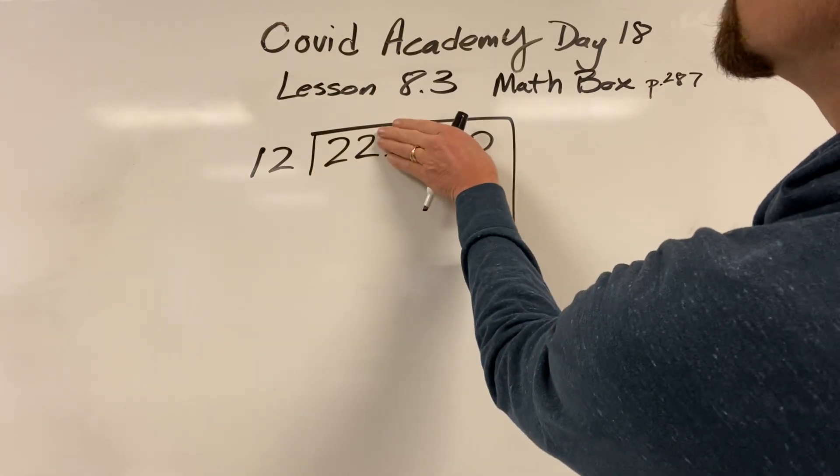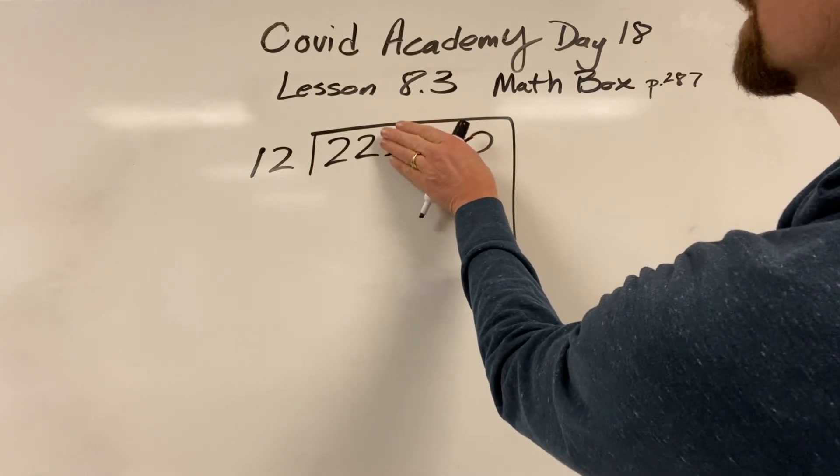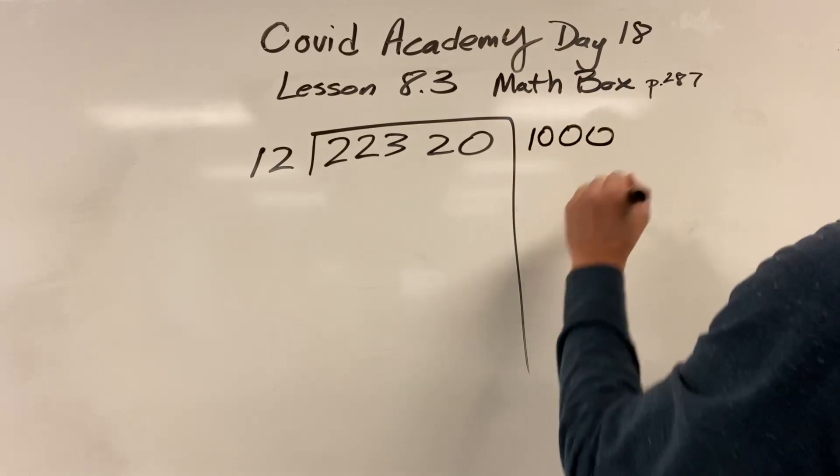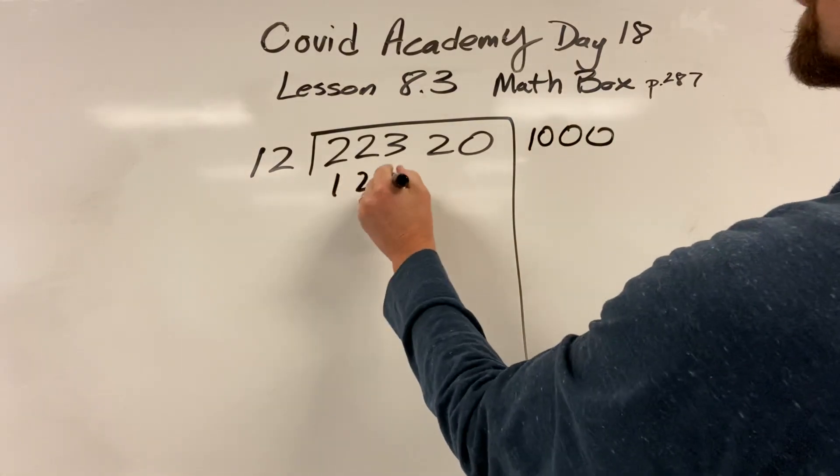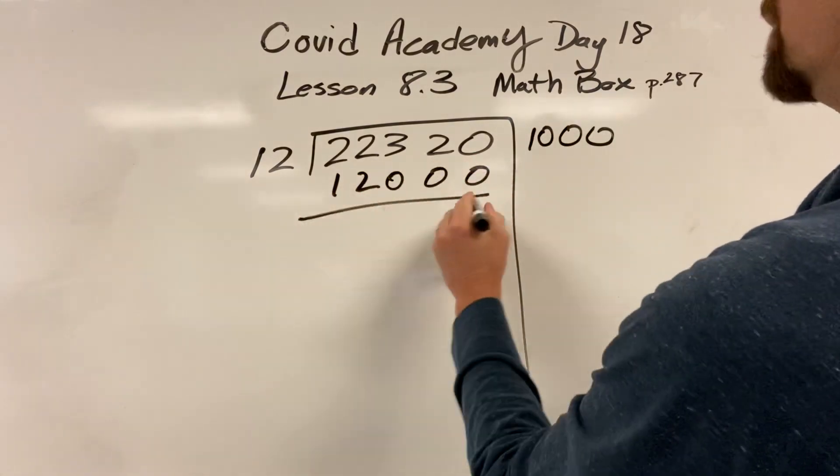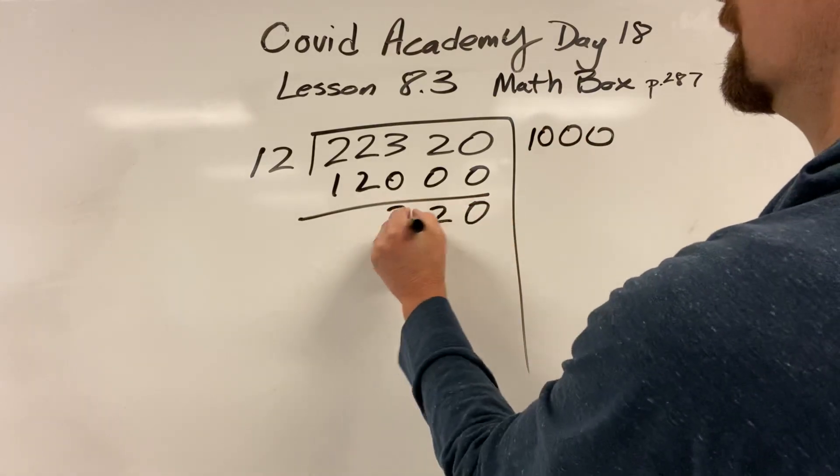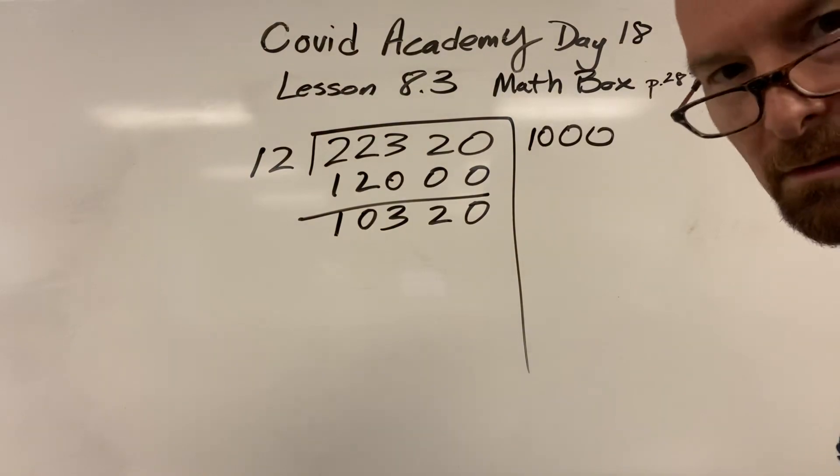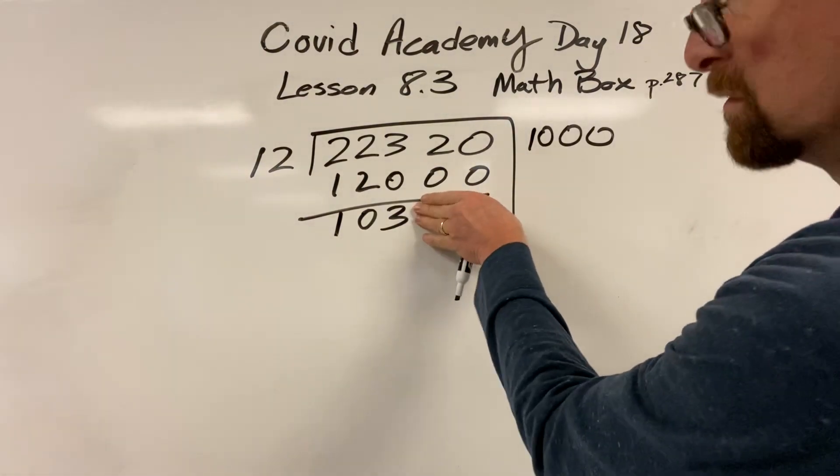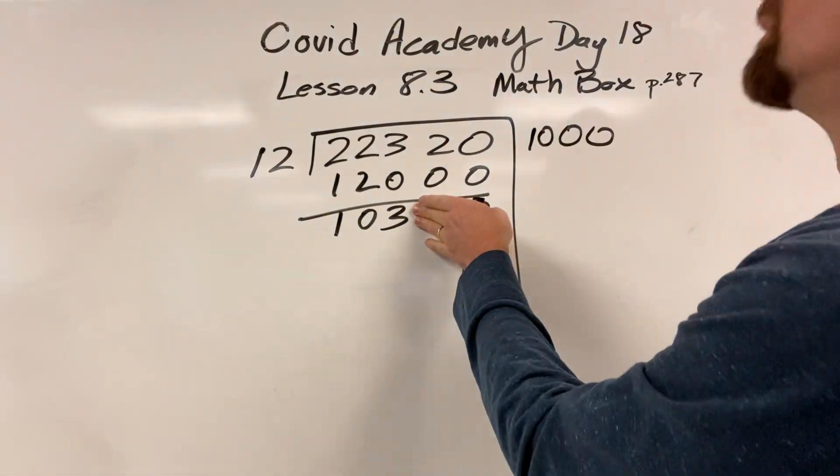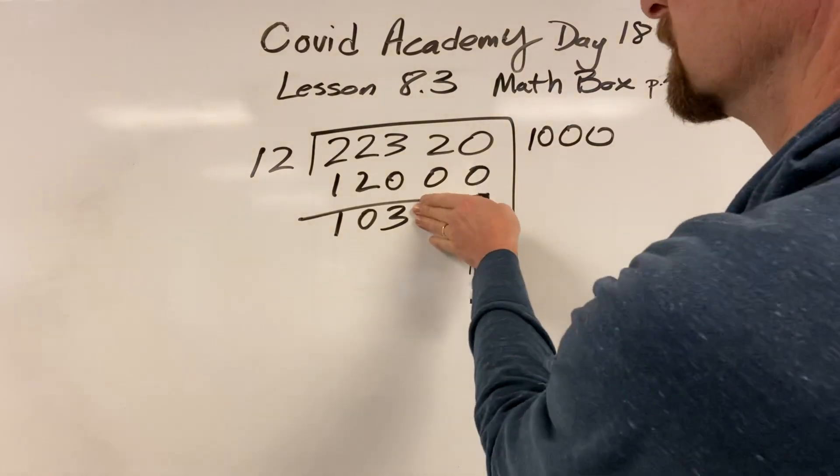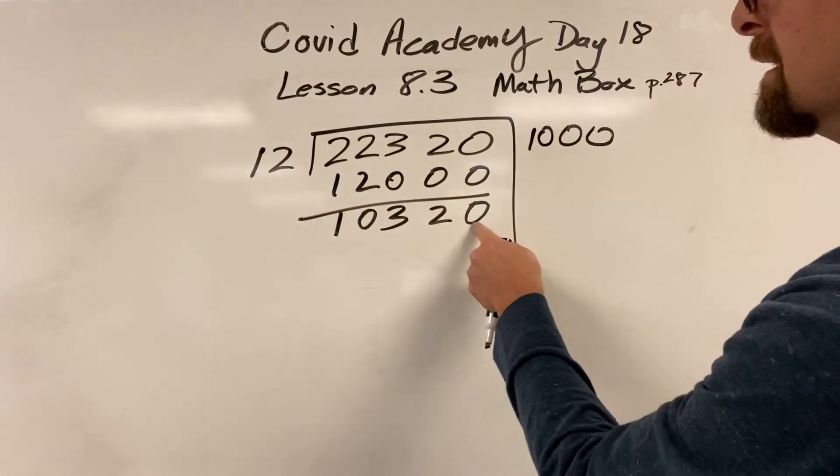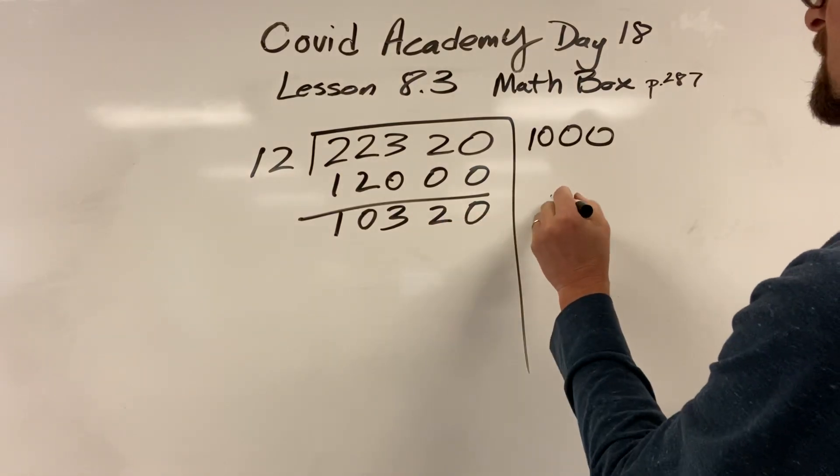How many 12s fit into 22? One of them does. So I put 1 followed by 1, 2, 3. So I have 12,000. Now it is more difficult. How many 12s fit into 103? 8 of them do. 8 times 12 is 96. So 8, 2 digits. So I put 800.